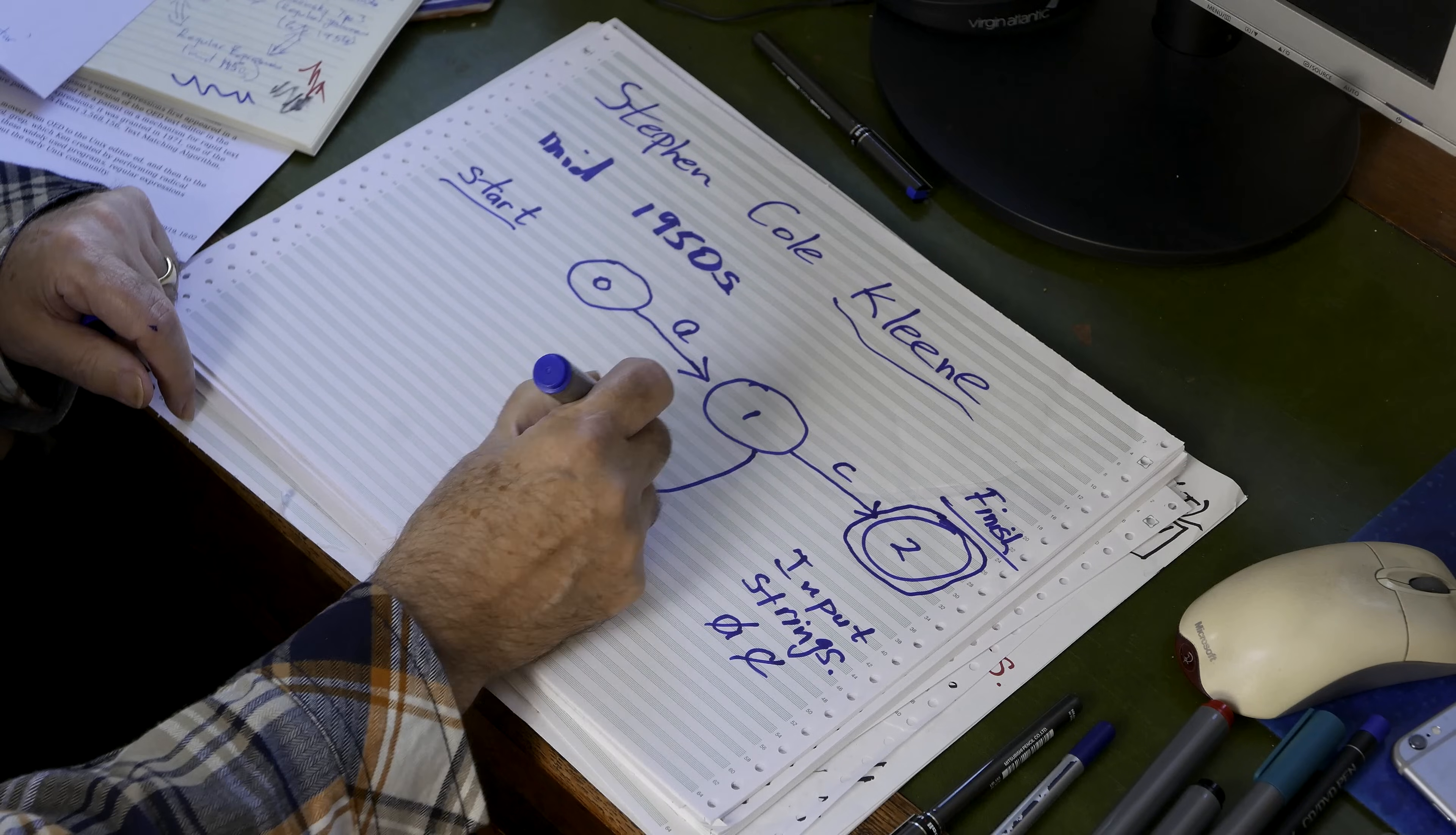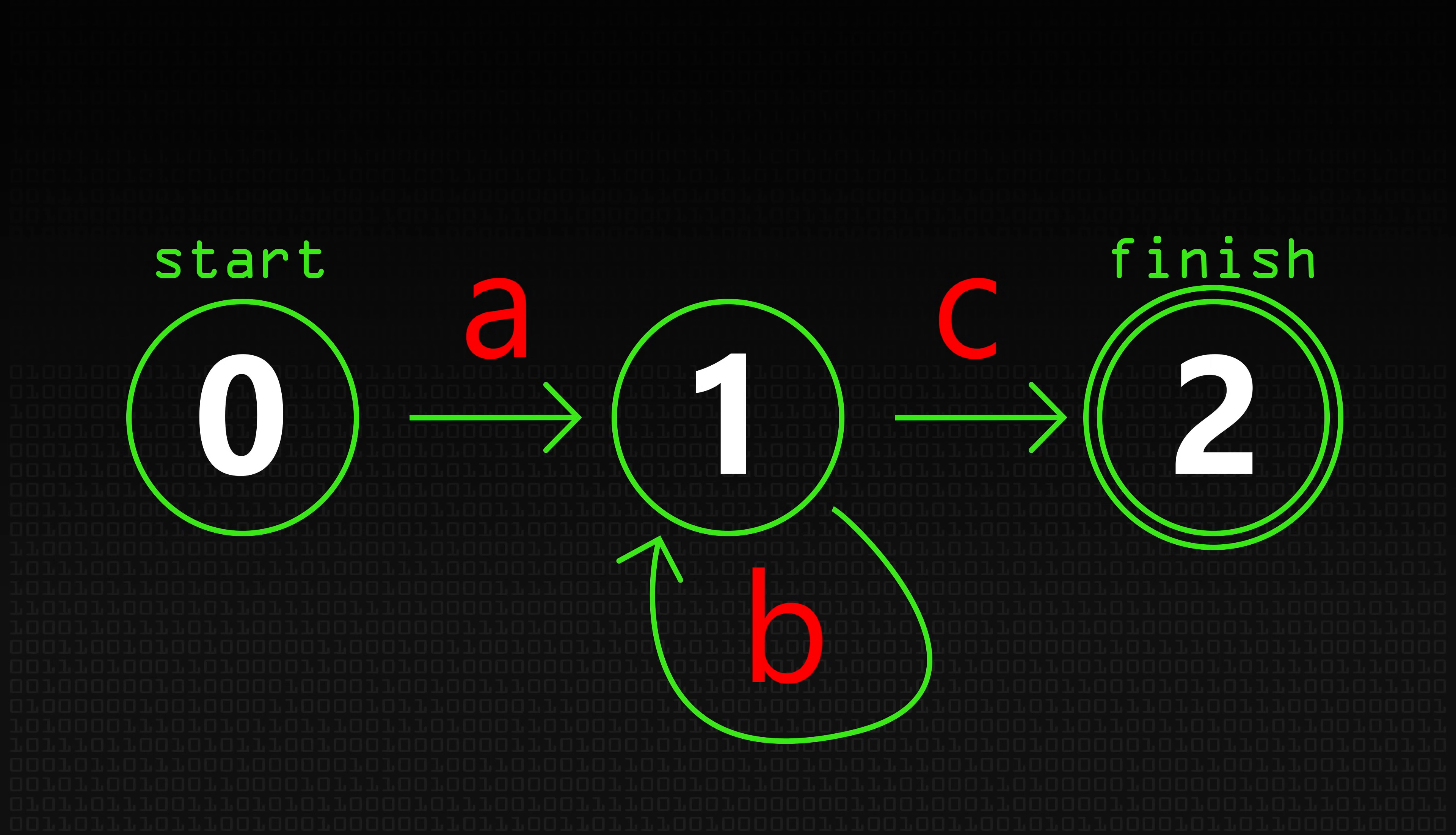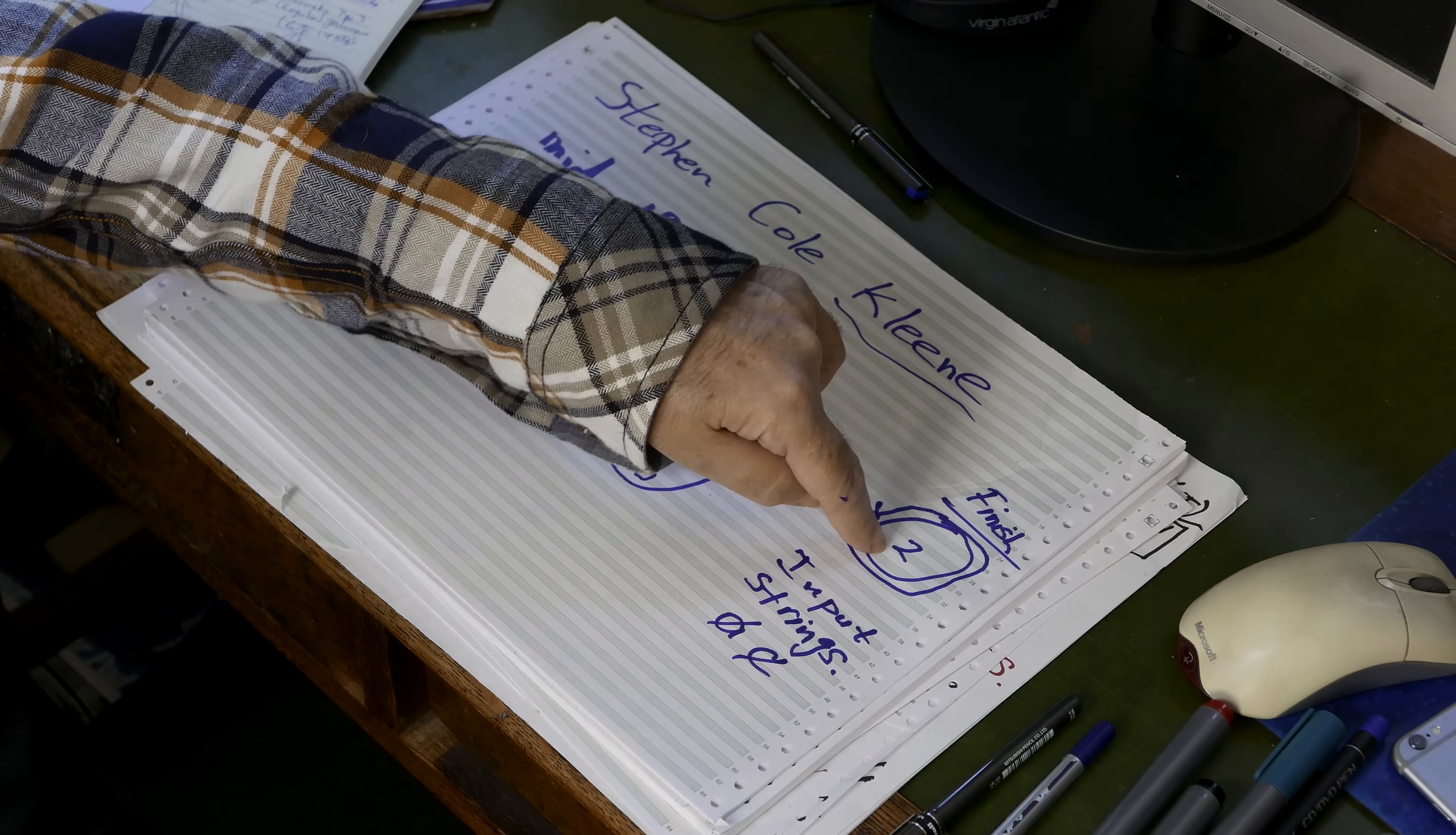Usually the finished state is sometimes distinguished by drawing a sort of double circle like that. So you just glance at it and say that's it. What I've drawn there certainly recognizes the string AC. Frankly, electronics engineers and so on were using these not in the late 50s, in the early 50s. They used them for creating and understanding what they called state machines.